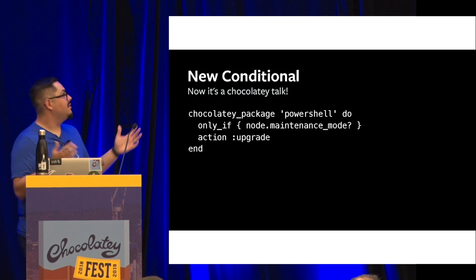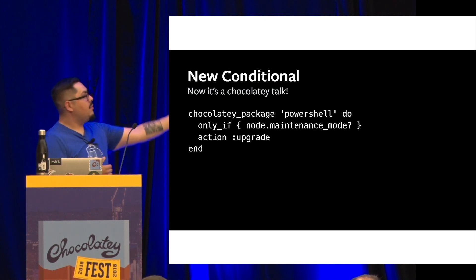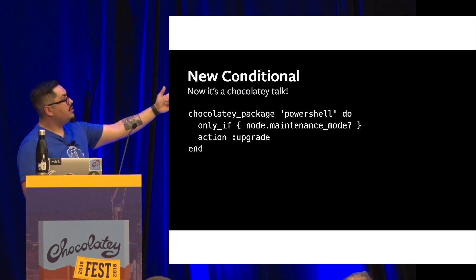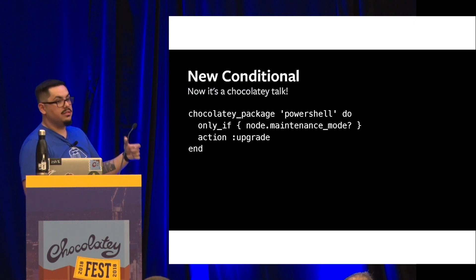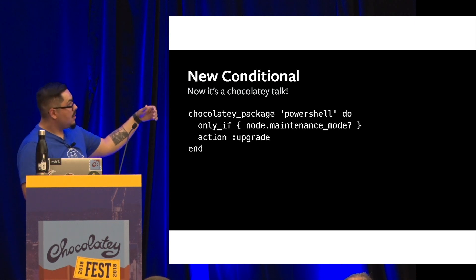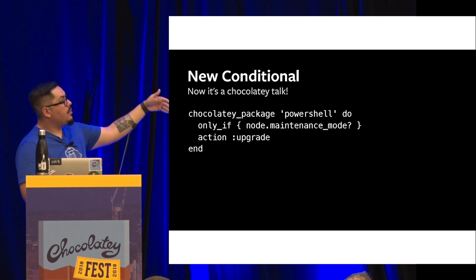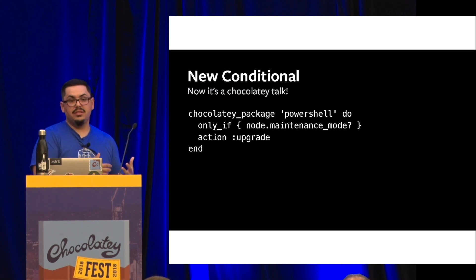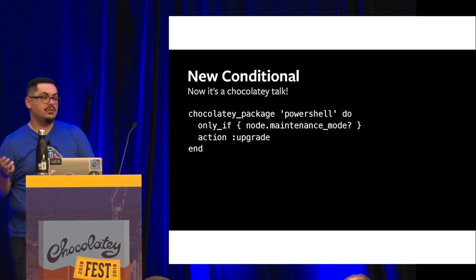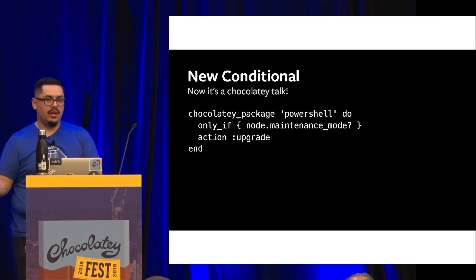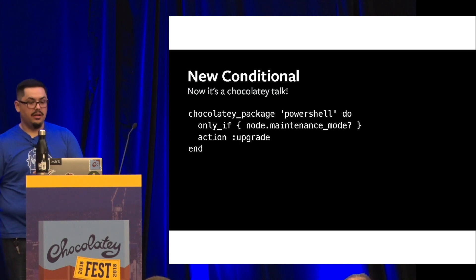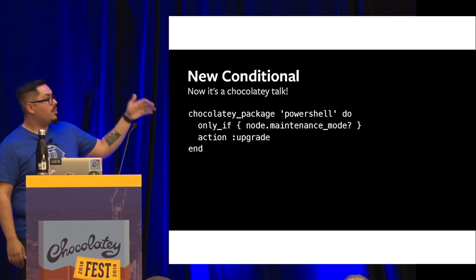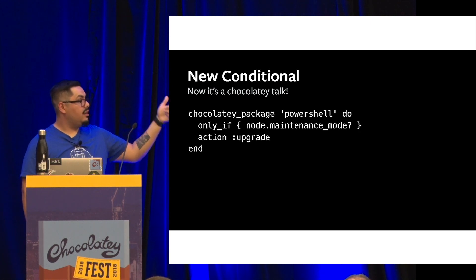And now we have a Chocolatey example. Here we're able to leverage the new function and check to see if that node is in the maintenance window. So here we would upgrade PowerShell only if you're in that window. Let's say you have a team that deploys a web service and they like to do that on Saturdays, but they don't really want to stick around — they've already rolled out to UAT and they know they want to upgrade on Saturdays. They can define their window and say only upgrade this application if you're in the window.